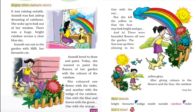One flower with orange and another with red. But she left the yellow so the sun may look bright and gay. She left only the yellow color. Why? Because yellow is the color of the sun. She thought that when the sun sees this, it will be very happy.